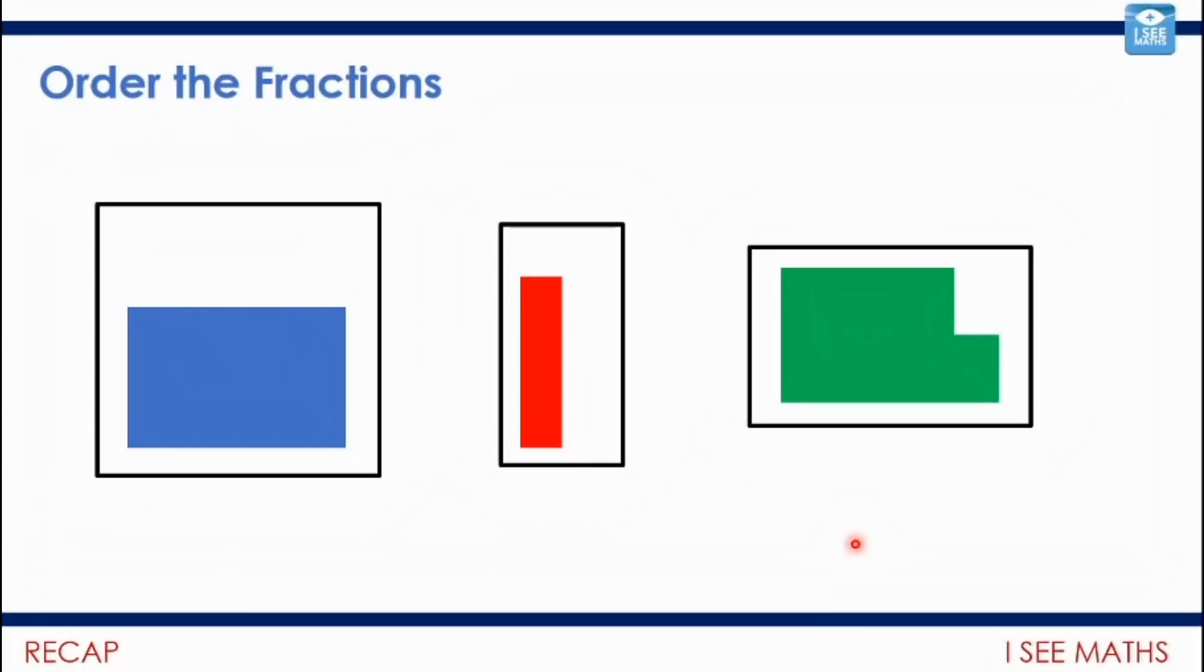So let's try and extend this understanding. Have a look at these three examples and I want you to order the fractions. Which fraction is larger? The amount of this square that's blue, the amount of this rectangle that's red, or the amount of this rectangle that's green. Order the fractions from smallest to largest. Pause the video and have a go. You might not be able to name them, how big they are, but I think you could order them.